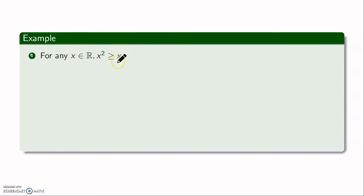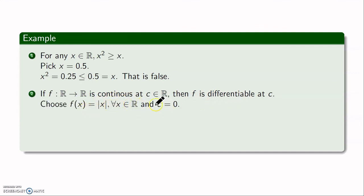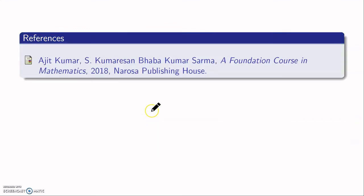Consider the statement: for any real number x, x² ≥ x. To disprove it, I need one real number for which x² < x. Choosing x = 0.5, we get x² = 0.25, which is strictly less than 0.5. So the statement is false. As another example: if a function f from ℝ to ℝ is continuous at c, then it is differentiable at c. To disprove this, consider f(x) = |x| at the origin — it is continuous but not differentiable there.